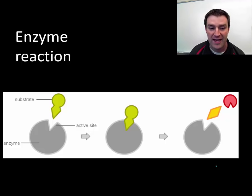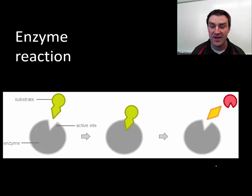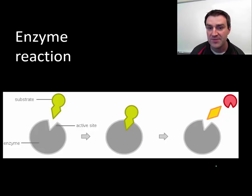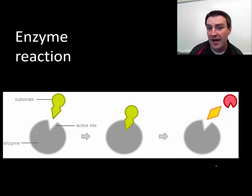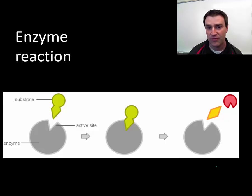An enzyme is shaped to fit a particular chemical called the enzyme's substrate. When they're mixed together, they have the potential at the molecular level to collide with one another. When a substrate collides in the enzyme's active site, the enzyme will speed up the chemical reaction of the substrate and help it turn into products that then leave the active site. The enzyme can then repeat this if it collides with another substrate.